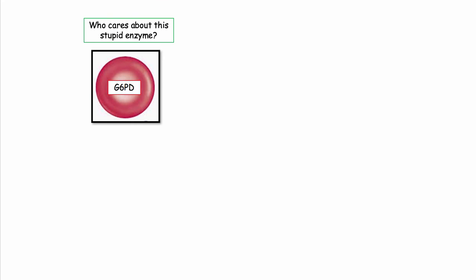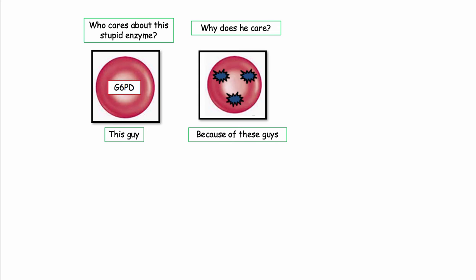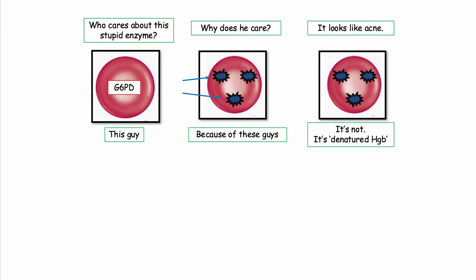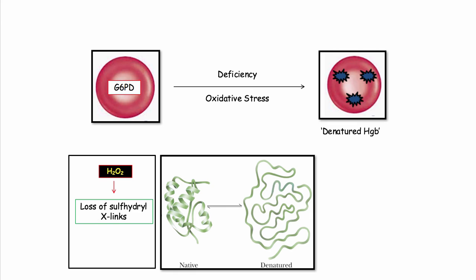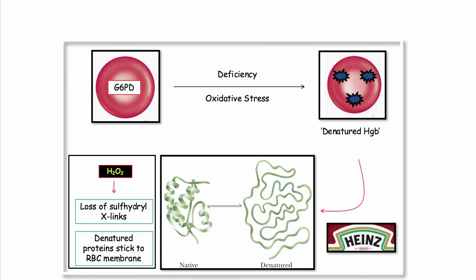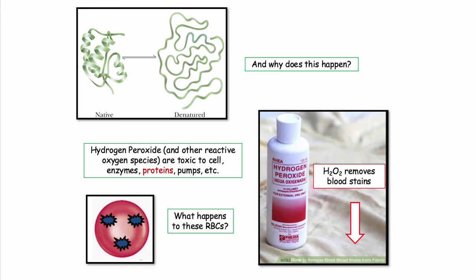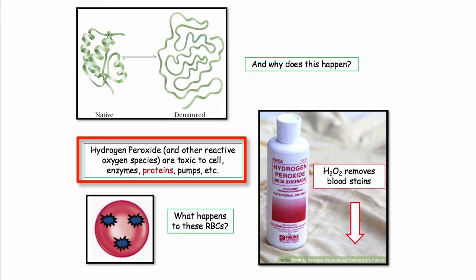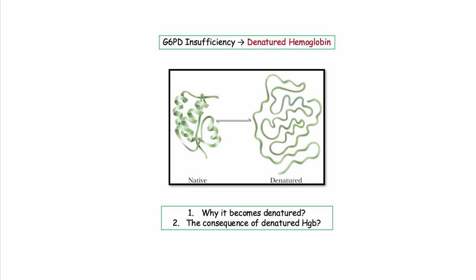So who cares about this enzyme? The red blood cell. In the setting of G6PD deficiency plus oxidative stress, we generate hydrogen peroxide. Hydrogen peroxide leads to loss of sulfhydryl crosslinks on hemoglobin, and the hemoglobin literally denatures. The denatured proteins stick to the RBC membrane — denatured hemoglobin that sticks to the RBC membrane is called Heinz bodies. Hydrogen peroxide is the answer to why hemoglobin denatures.